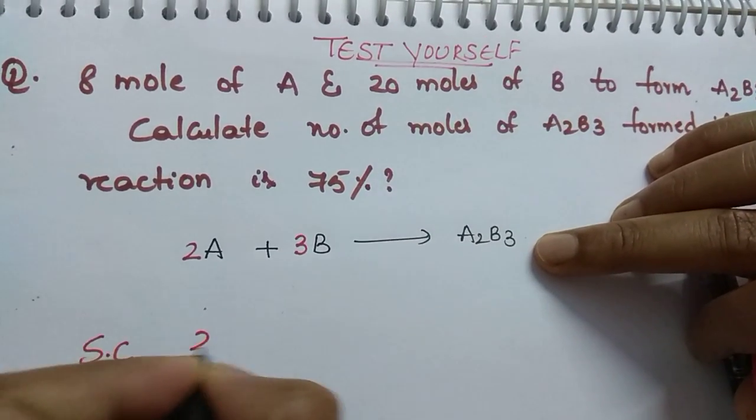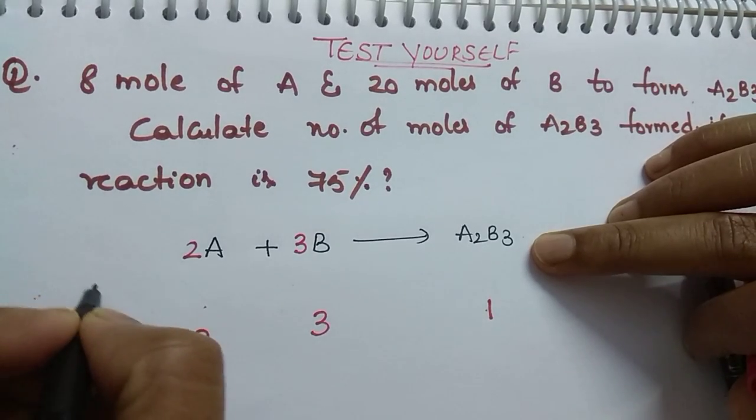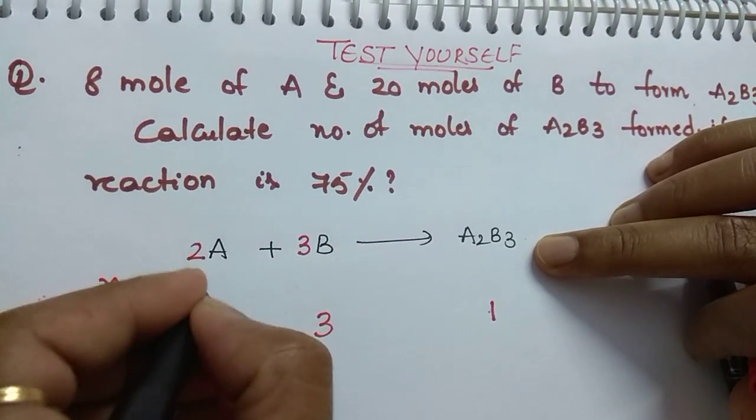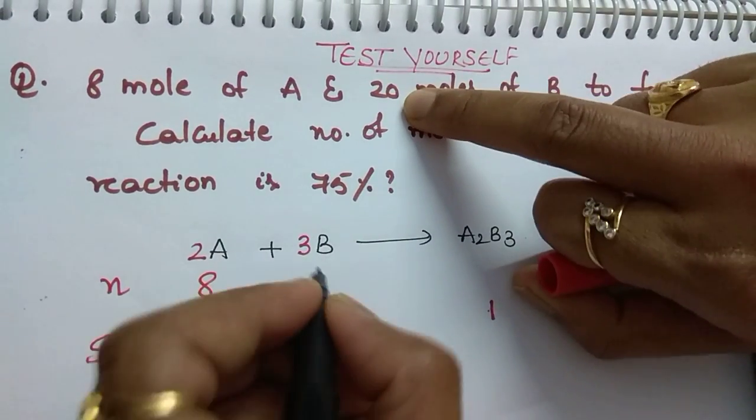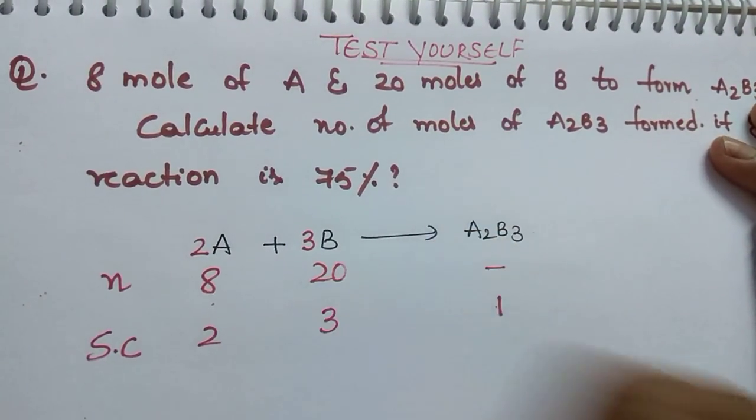The number of moles given in the question: 8 moles of A and 20 moles of B. We have to find how many moles of A2B3 are formed.